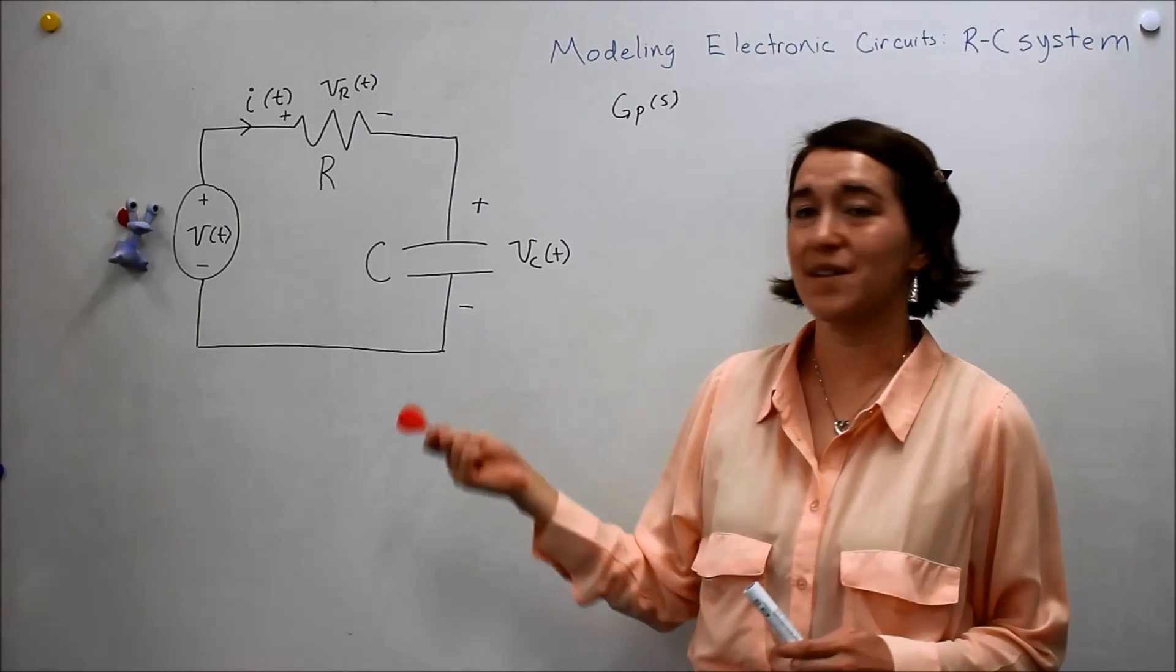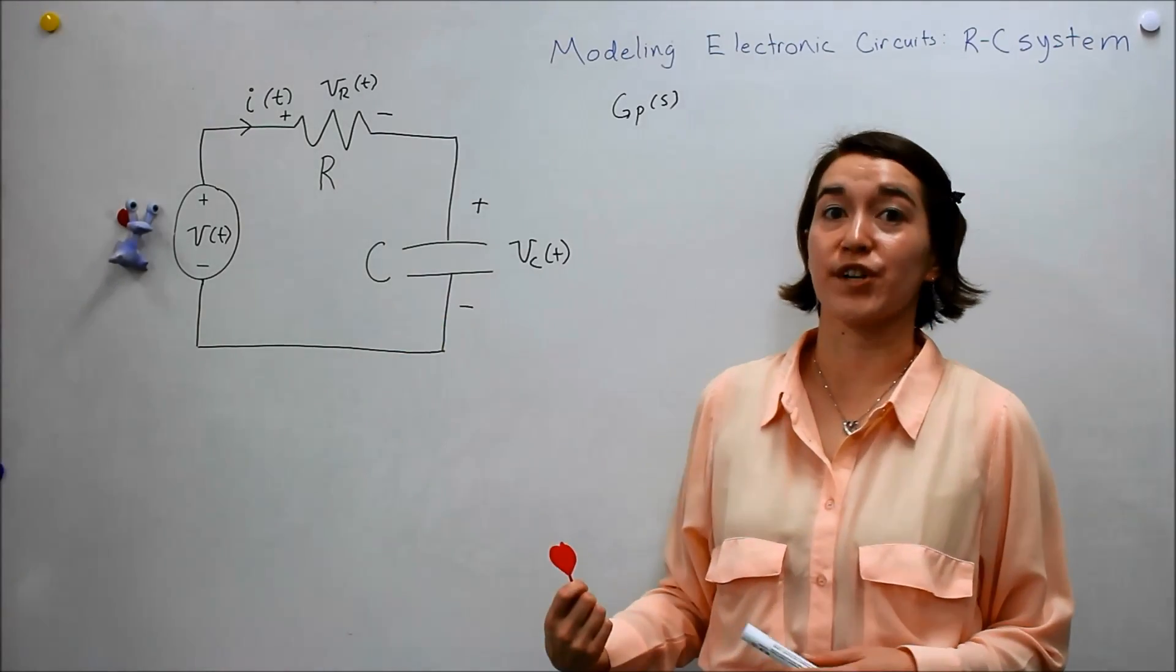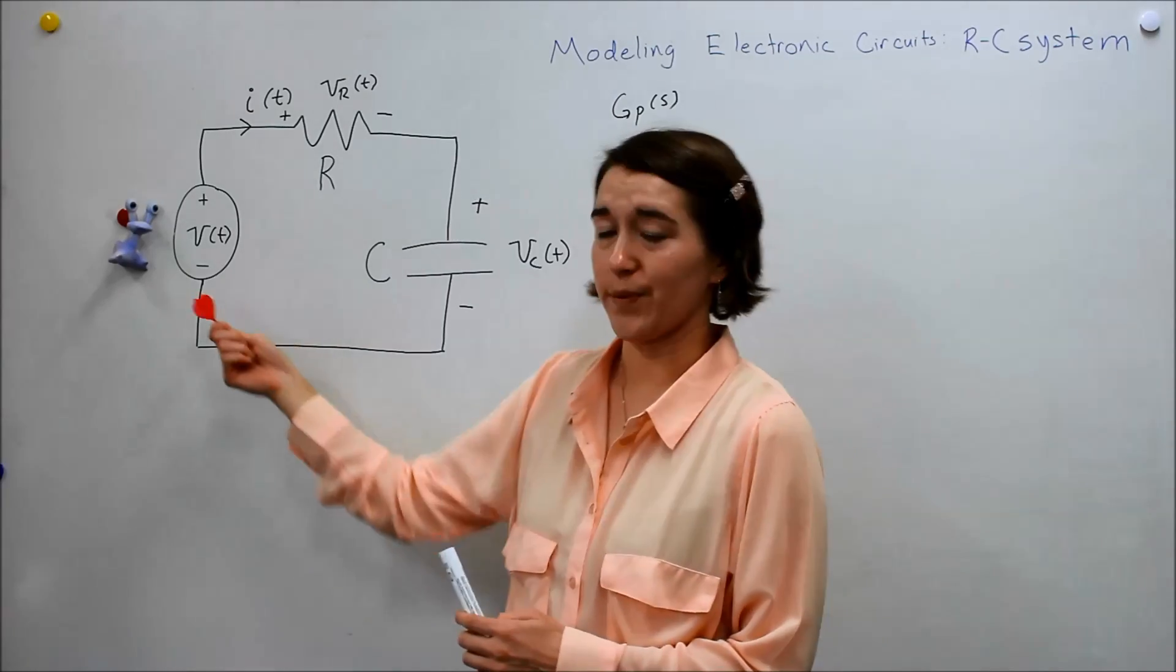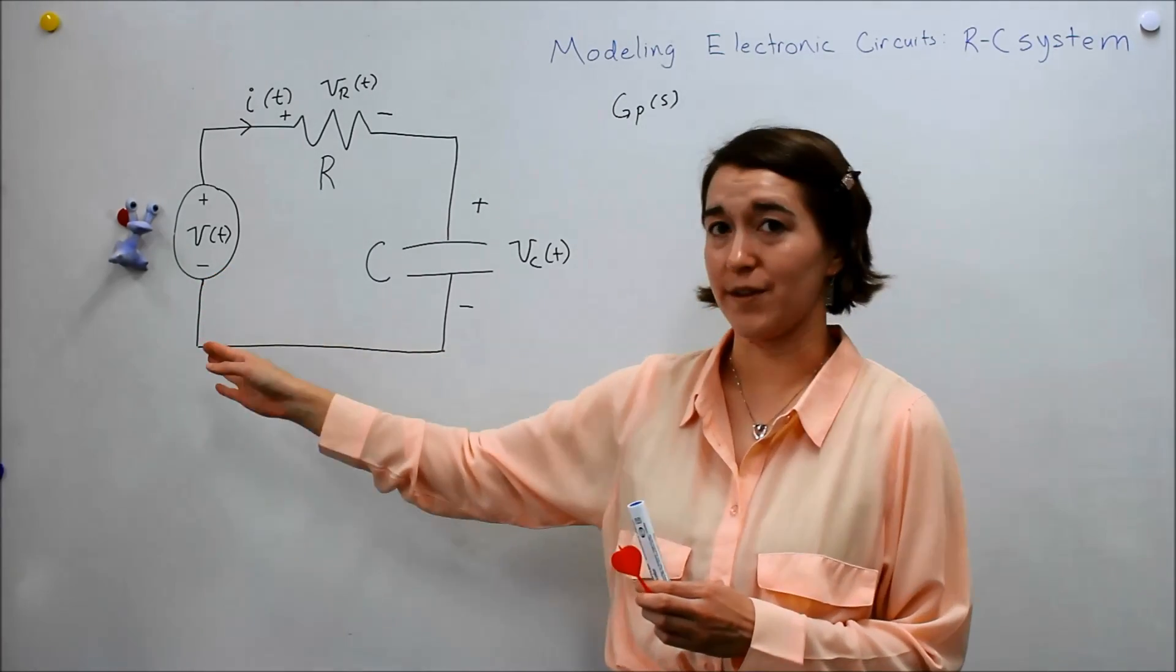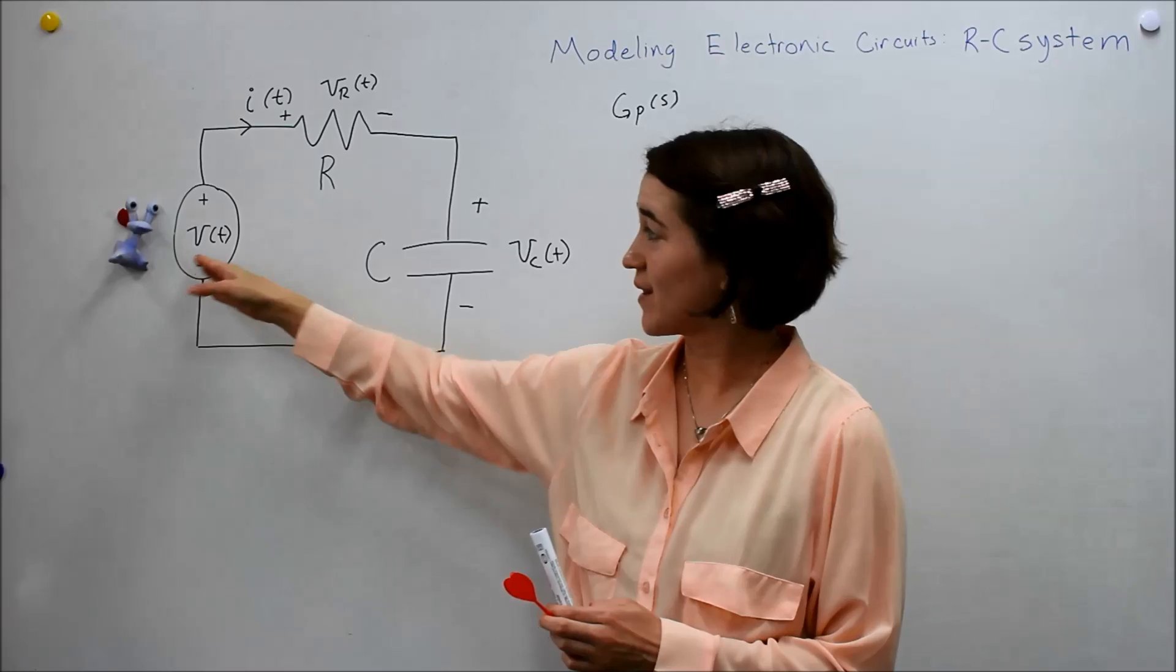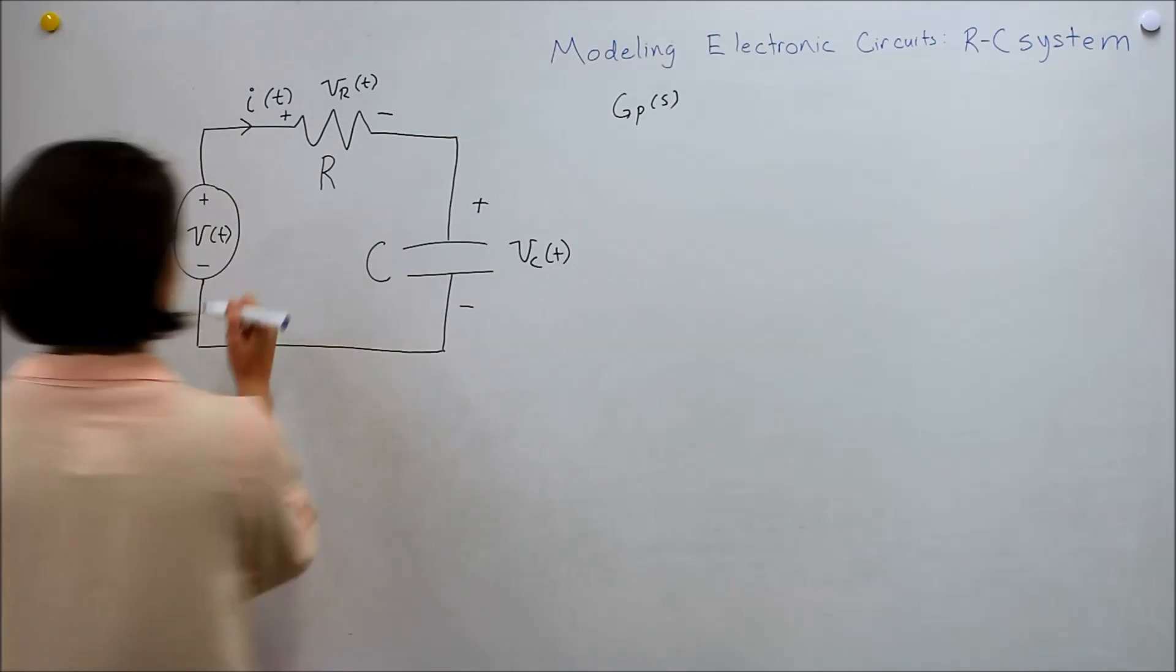Next we're going to break down this system and derive the transfer function for it. We're assuming that our input is Valerie, she's controlling this voltage, so this is our input variable here.